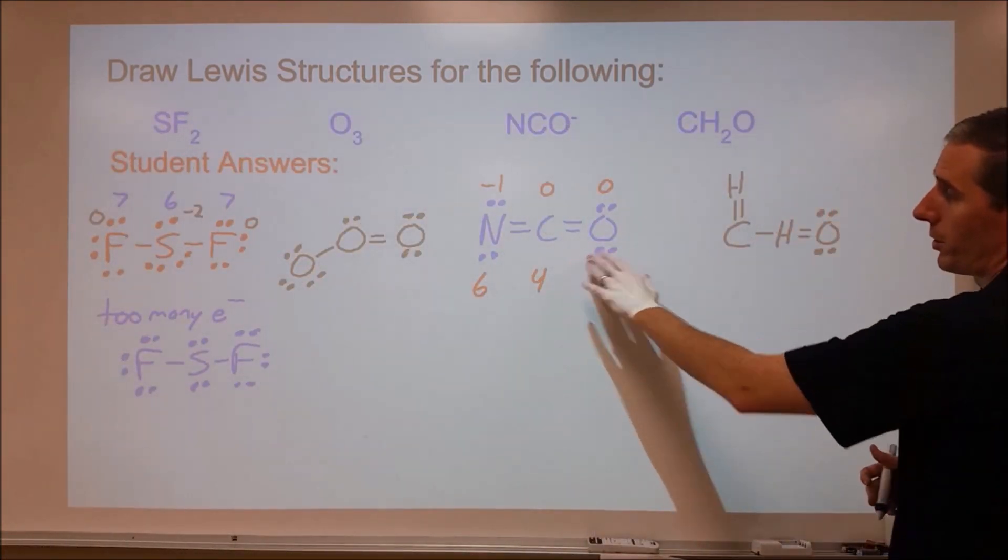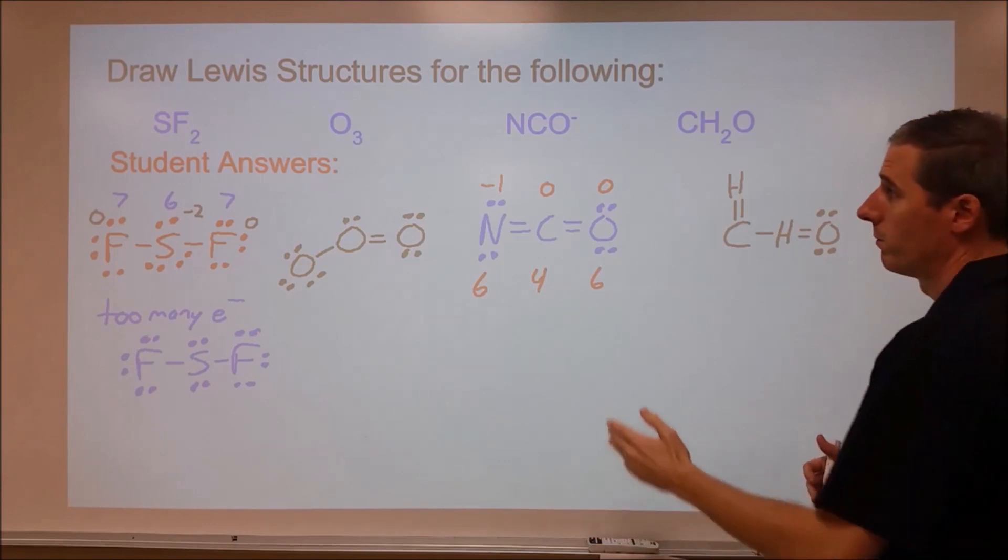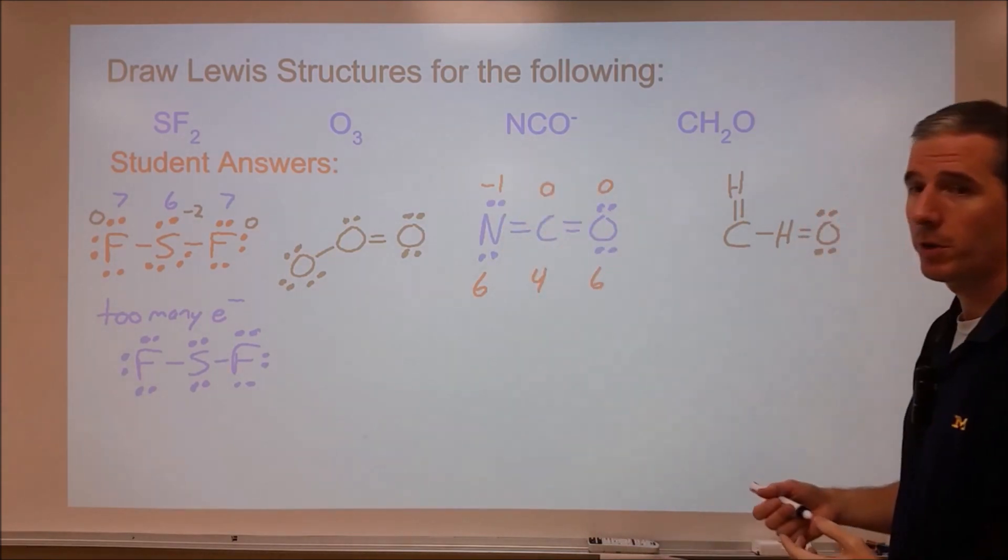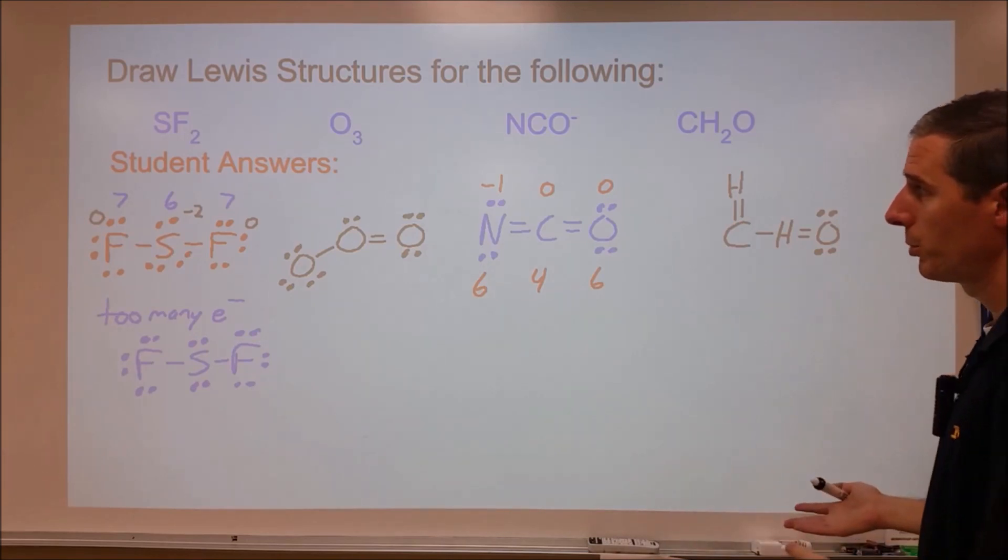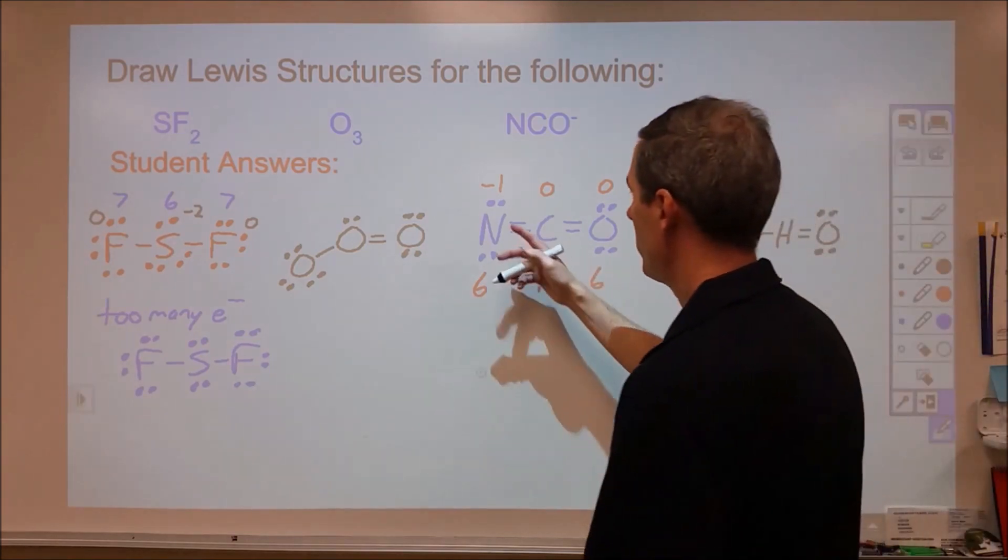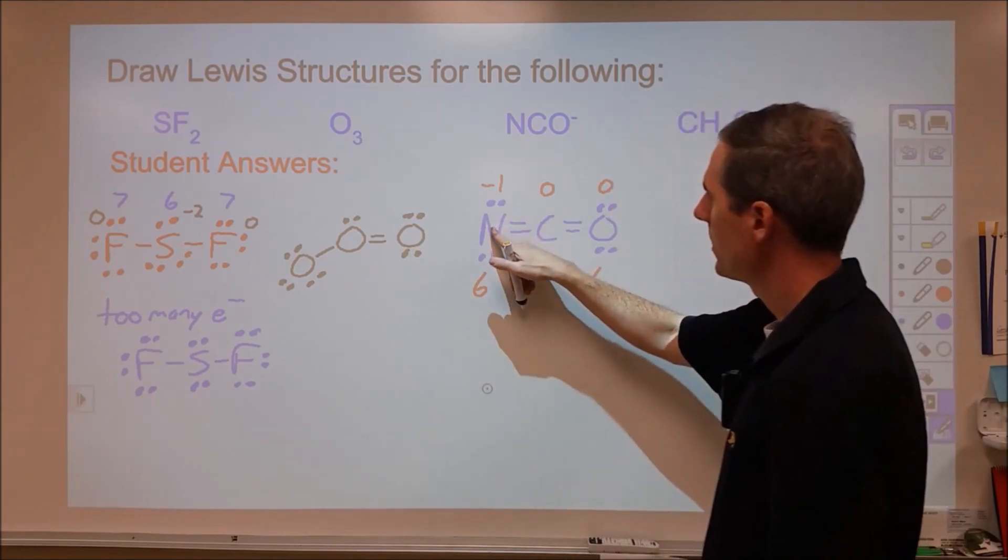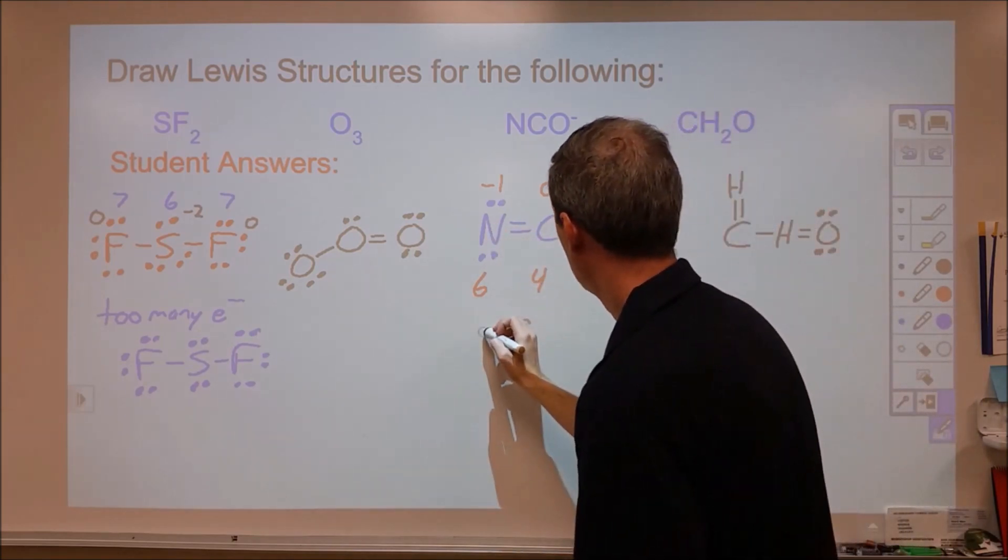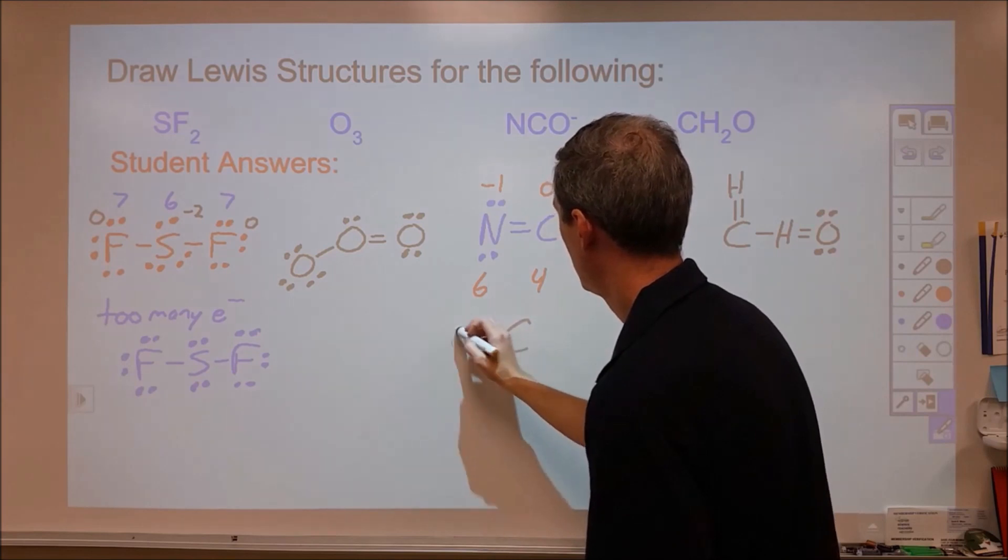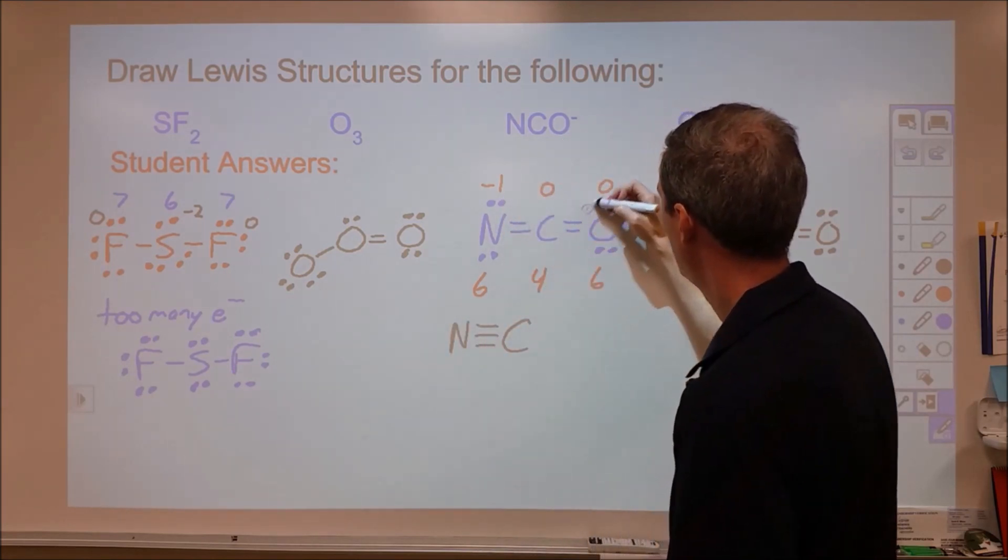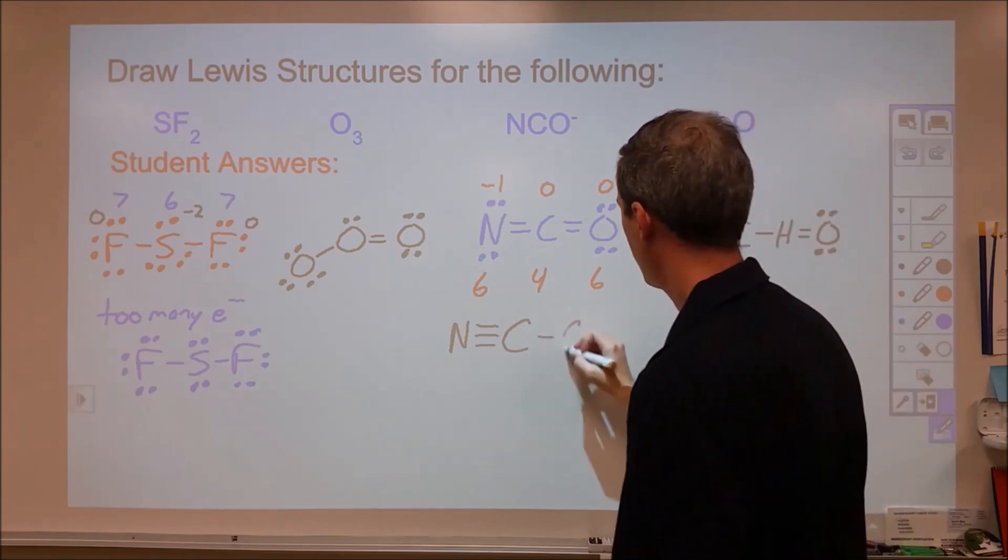Now in this Lewis structure, we have the correct amount of electrons, minus one, zero, zero, but our distribution of them is something that could be improved. This isn't necessarily an incorrect Lewis structure, but there is a better one available, because there's another one where we can pull two electrons here to form a triple bond, move two electrons over here to the oxygen like this.